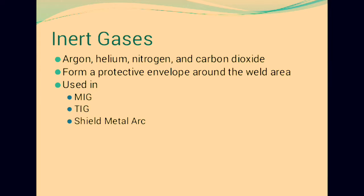The gases form a protective envelope around the weld. This is used in MIG, TIG, and Shielded Metal Arc welding where inert gases are used. Vacuum produces high quality welds and is used in electron beam welding. It reduces impurities by a factor of 20 versus other methods, though it is expensive and time consuming but useful.